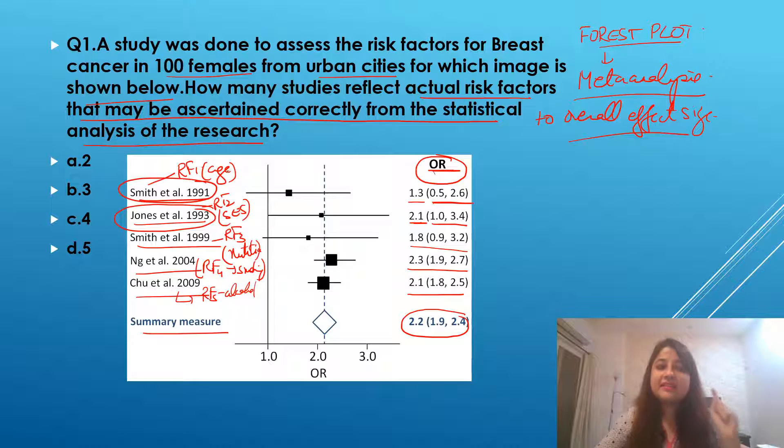So when we look at the study number one, Smith et al., for which we studied age, over here, if you look at odds ratio, it is 1.3 with an interval of 0.5 to 2.6.